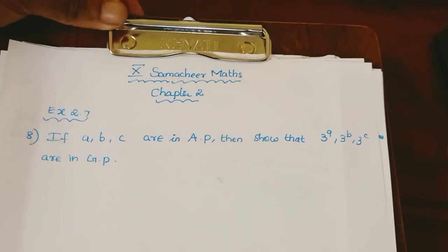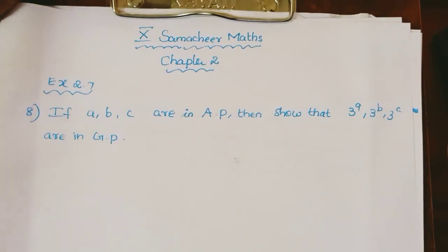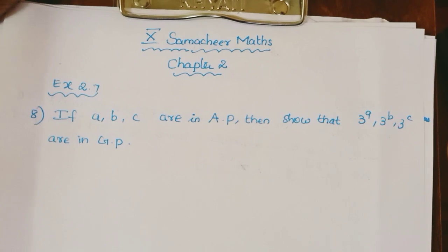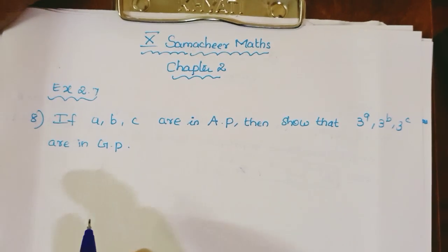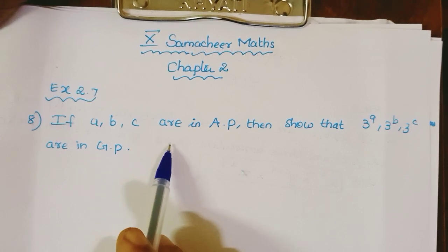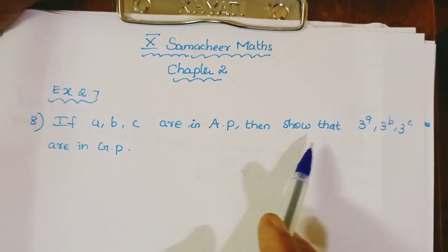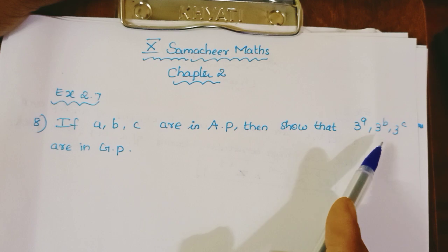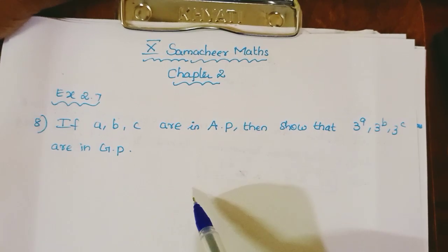Now students, in 10th grade Maths, Chapter 2, Exercise 2.7, 8th sum: If A, B, C are in AP, then show that 3 power A, 3 power B, 3 power C are in GP.